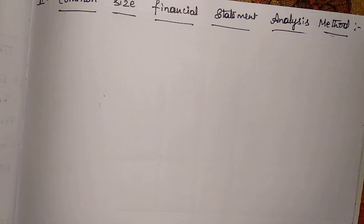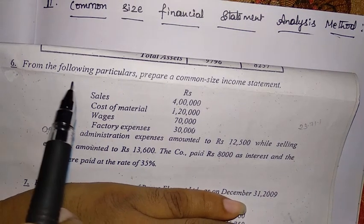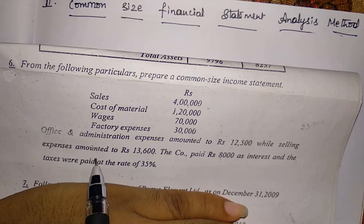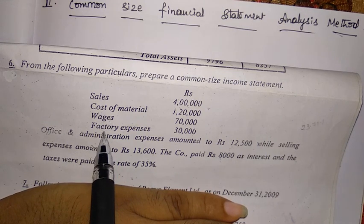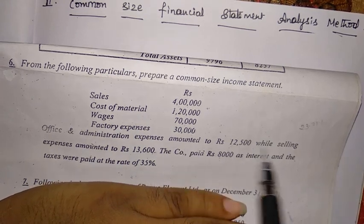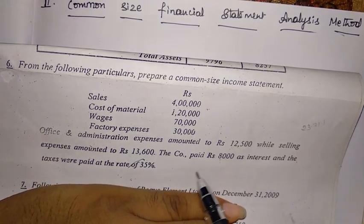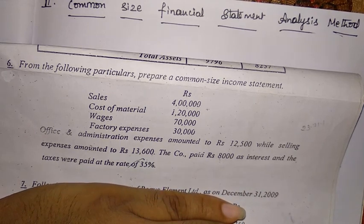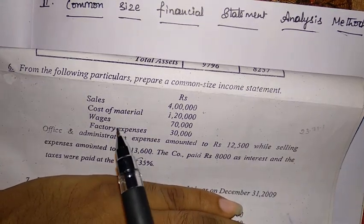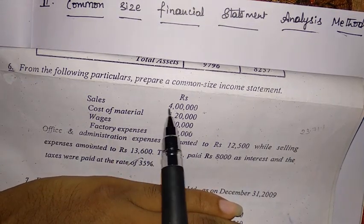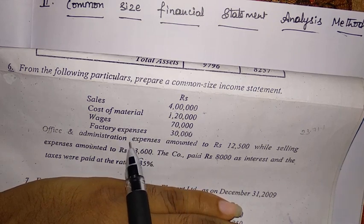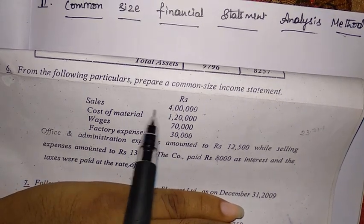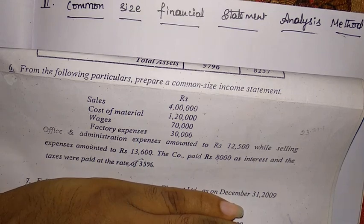Let us see the practical problems. From the following particulars, prepare a common size income statement. Sales, cost of materials, wages, factory expenses, office administration expenses, and selling expenses are given. The company paid 8,000 as interest and taxes were paid at 35%. We have to prepare an income statement where the biggest item will be sales, so each item in the income statement is converted into a percentage of sales.